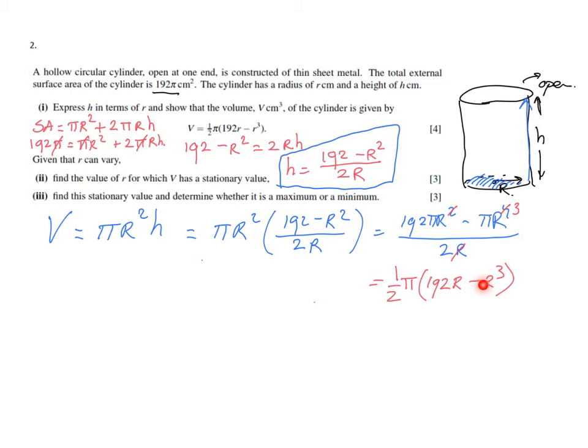Let's move on. Given that r can vary, find the value of r for which V has a stationary value. What does a stationary value mean? It means if you would graph it you have a local minimum or maximum - the stationary value means that the gradient, the derivative, is zero.